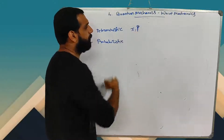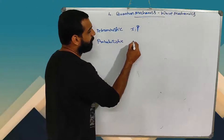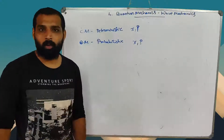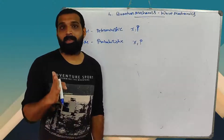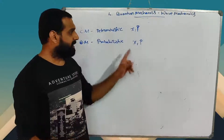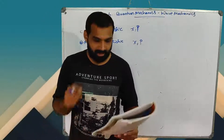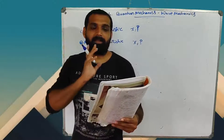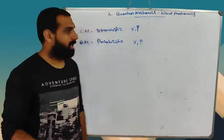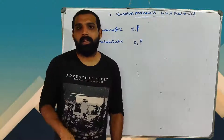In quantum mechanics, we cannot predict position and momentum with certainty. The uncertainty principle means that the initial observation itself is not found with accuracy. We cannot simultaneously know x and p. Therefore, the future can only be given as a probability — that is the probabilistic nature of quantum mechanics.